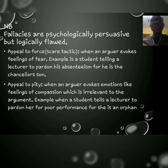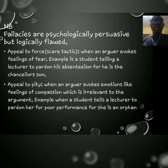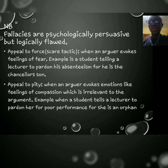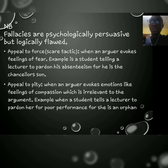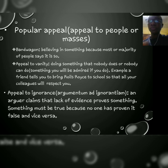The appeal to pity is the companion fallacy to appeal to force. Here the arguer tries to evoke emotions and compassion that are irrelevant to the argument. For example, a student asks a lecturer to pardon her poor performance because she is an orphan — how does being an orphan connect to poor performance? This is like political candidates who come to ask for your vote and appeal to pity. You need to be very aware — these are fallacies.